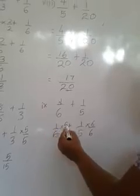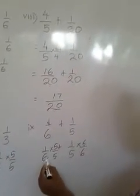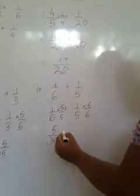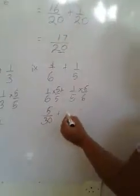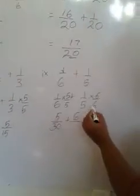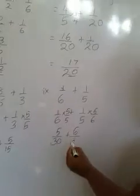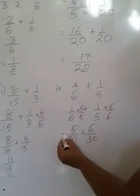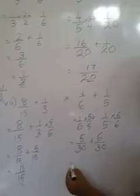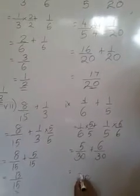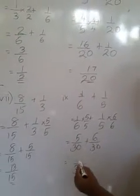1 times 5 is 5. 6 times 5 is 30. Added 1 times 6 is 6. 5 times 6 is 30. Now same denominator we put. It is 30. 6 and 5 added 11.